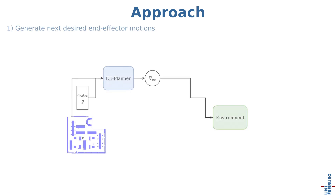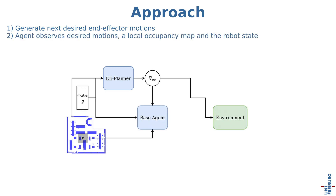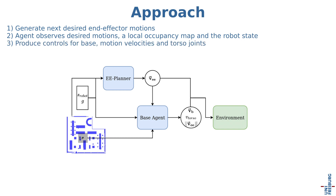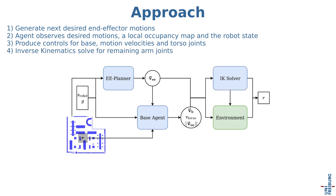First, a simple motion generator produces the next desired end-effector motions. The agent observes these motions, together with a local occupancy map and the robot state, to produce controls for the base, motion velocities and torso joints. Finally, an inverse kinematic solver solves for the remaining arm joints.